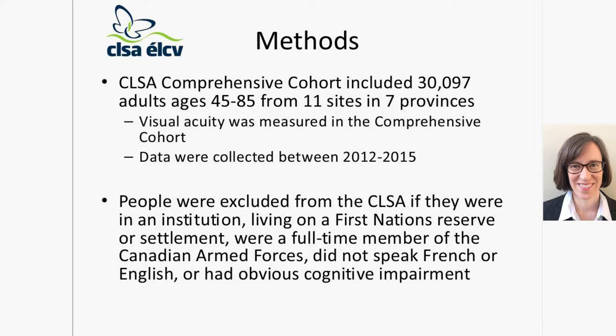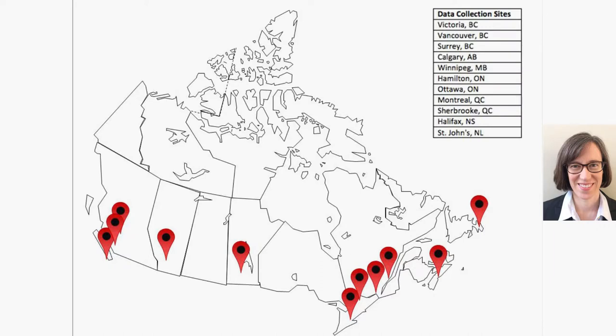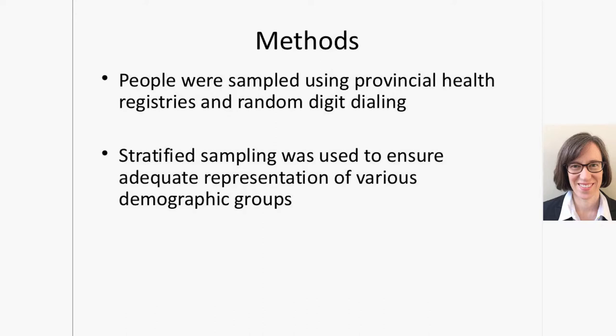People were excluded from this cohort if they were in an institution like a nursing home, living on a First Nations reserve or settlement, a full-time member of the Canadian Armed Forces, did not speak French or English, or had obvious cognitive impairment. It's important to keep that in mind as you look at the data on visual impairment, because people who are in nursing homes have higher rates of visual impairment. People also had to live within 25 to 50 kilometers of the data collection site, so we don't have people from the far north.